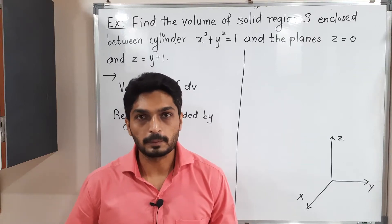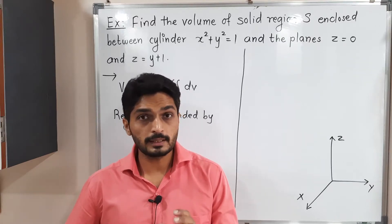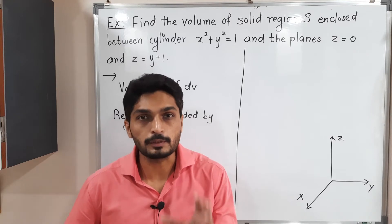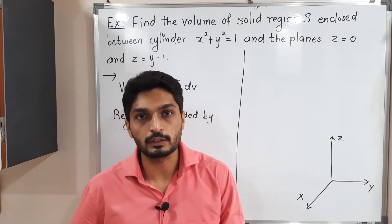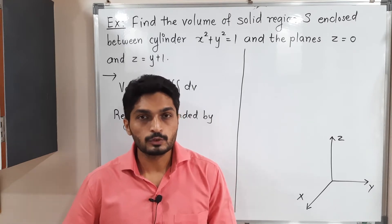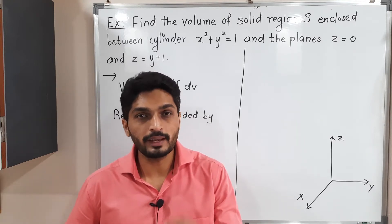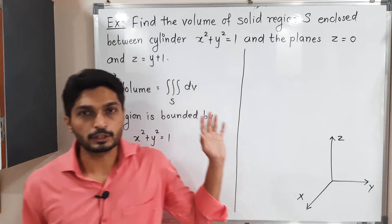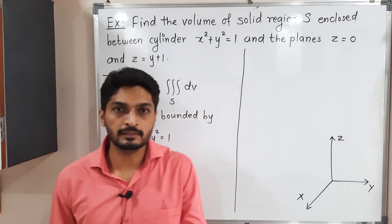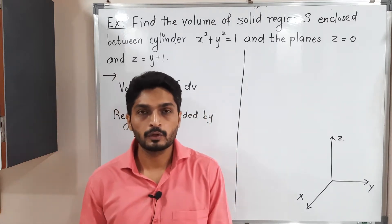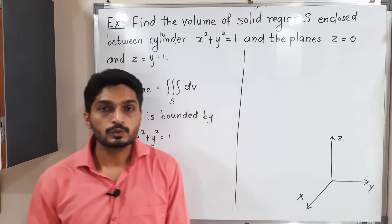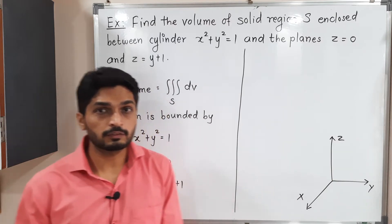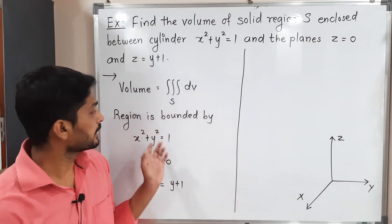Let us discuss this example. We have to find the volume of a solid region bounded by given curves. We know how to find volume — we have the simple formula: triple integration dV, or you can write dx dy dz.